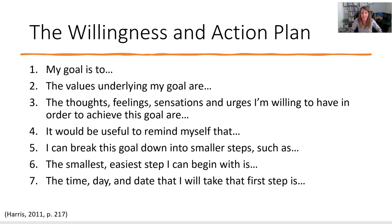The willingness and action plan is a step-by-step way to go through the whole process: 'My goal is... The values that underline that goal are... The thoughts, feelings, sensations, and urges that I'm willing to have in order to achieve this goal are...' — where you think about being willing to step outside your comfort zone. 'It would be useful to remind myself that...' — maybe that change won't happen overnight. 'I can break this goal down into smaller steps... The smallest, easiest step I can begin with is... The time, day, and date that I will take that first step is...'